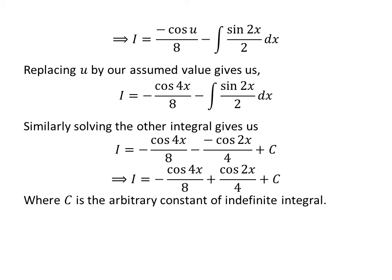Minus of minus is plus. So, i is equal to minus cosine of 4 times x upon 8, plus cosine of 2 times x upon 4, plus C.